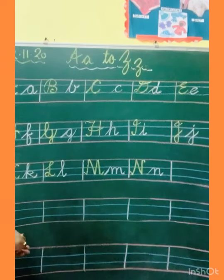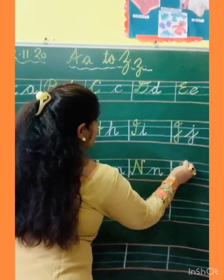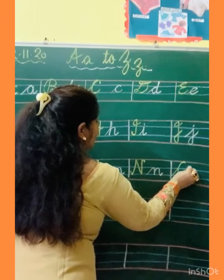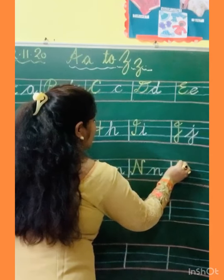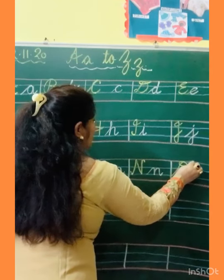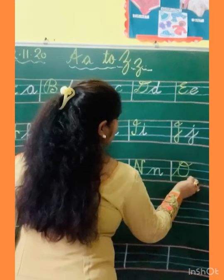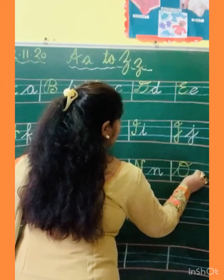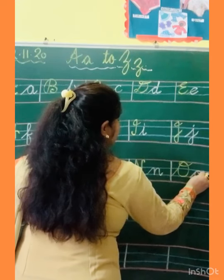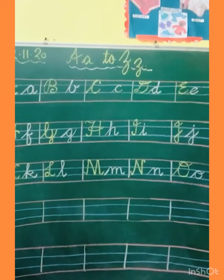Now O. How to make capital O? Slanting line, go up, make circle, touch the line, go up, come out, make a small circle, and kick. This is capital O. And now small O: slanting line, make O, turn, make circle, and kick. This is small O.